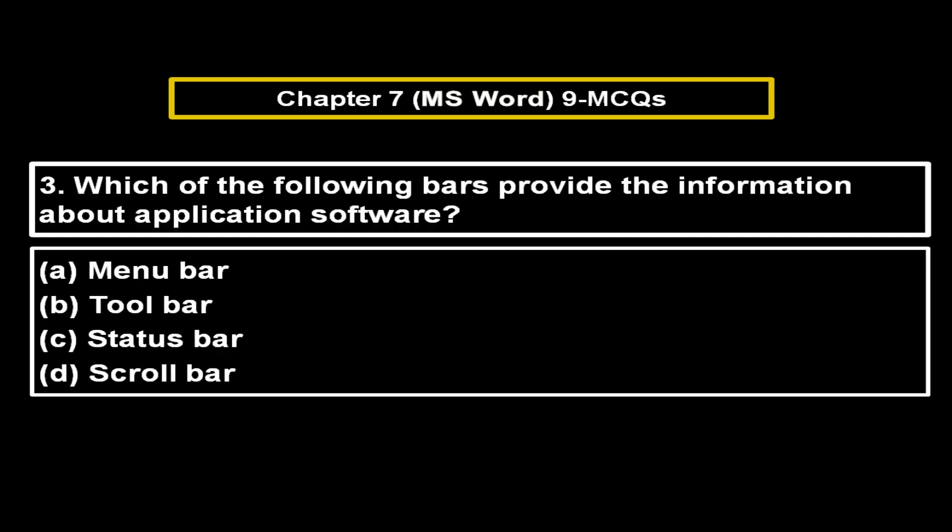Which of the following bars provides information about application software? Option A: Menu bar. Option B: Tool bar. Option C: Status bar. Option D: Scroll bar. The right answer is Option C — Status bar.